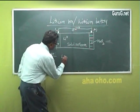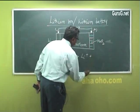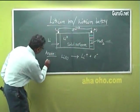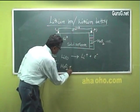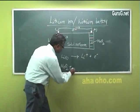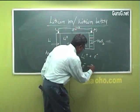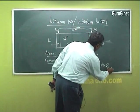lithium forms lithium plus ion and an electron. At cathode, this MnO2 takes up lithium plus ion and an electron to form Li-MnO2, a solid.